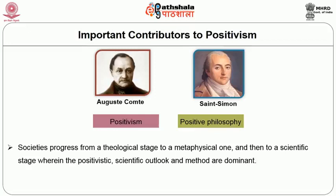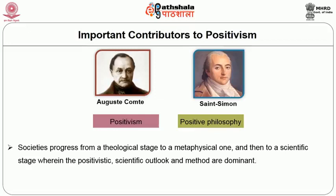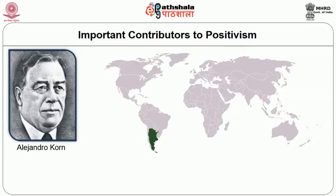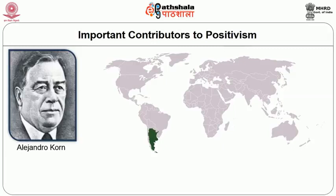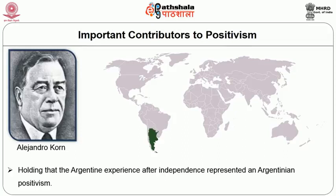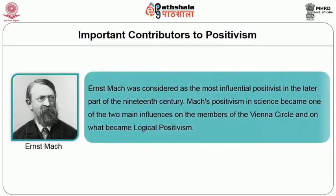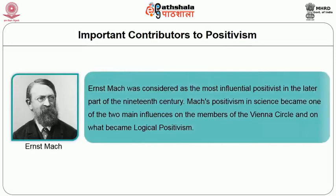Comte argued that societies progress from a theological state to a metaphysical one and then to a scientific stage wherein the positivist scientific outlook and methods are dominant. Auguste Comte is also widely regarded as being the first true sociologist. Argentine philosopher Alejandro Korn applied positivism in Argentina, holding that the Argentine experience after independence represented an Argentinian positivism.